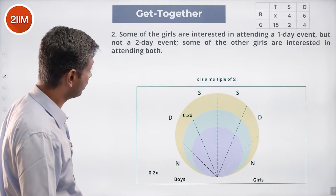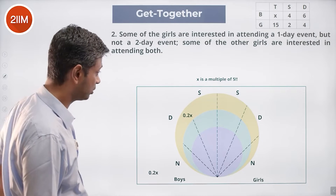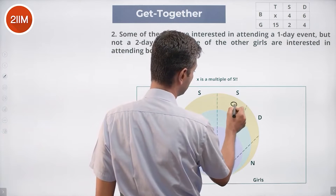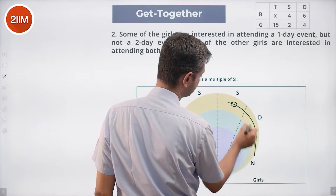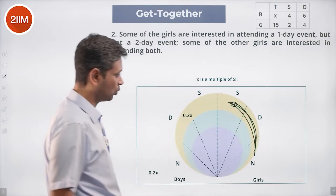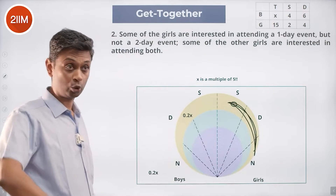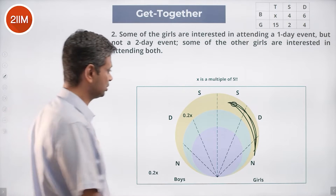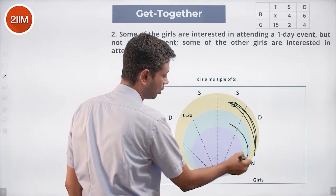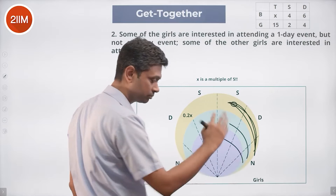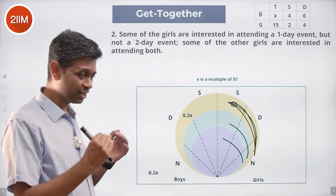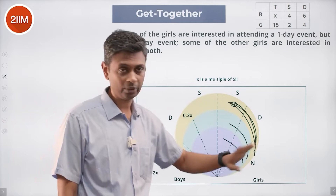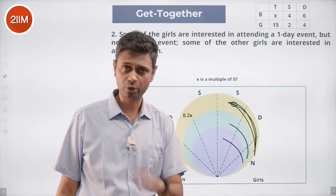Some of the girls are interested in attending a one-day event but not a two-day event — so some number sits in the one-day-only region for girls. Some other girls are interested in both one-day and two-day events, so they're inside the two-day region. Outside is zero for girls — that much we know.